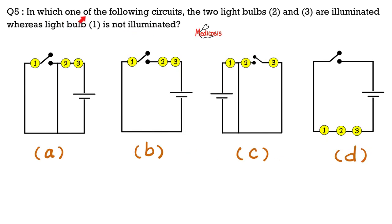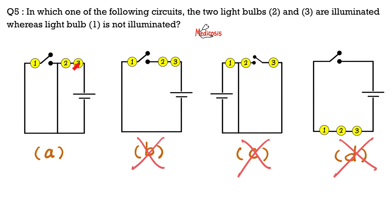Question number 5: in which circuit are light bulbs 2 and 3 illuminated but light bulb 1 is not? In one option the circuit is open, so none are illuminated. In another, bulb 1 is illuminated but 2 and 3 are off — the opposite of what we want. In another the circuit is opened again, so all are off. The correct answer is choice A: there is a closed circuit for bulbs 2 and 3, but bulb 1 has an open circuit, so 2 is on, 3 is on, and 1 is off.